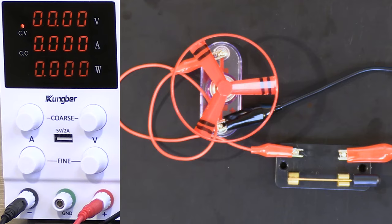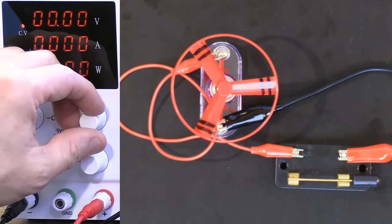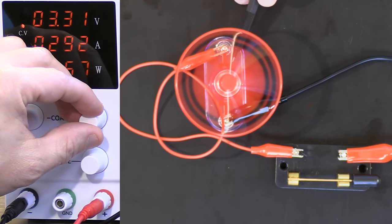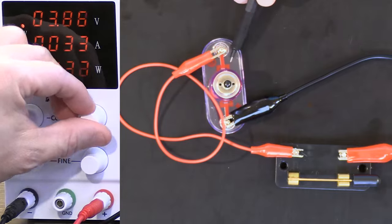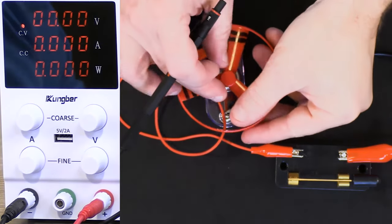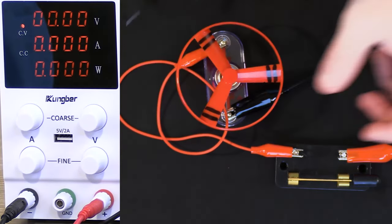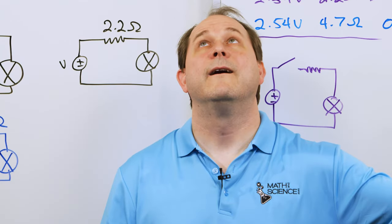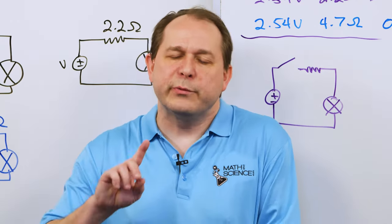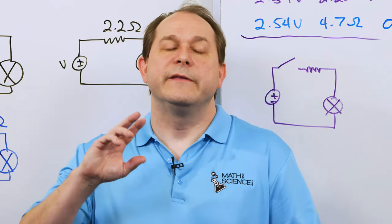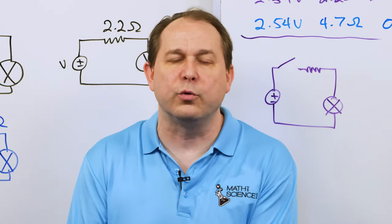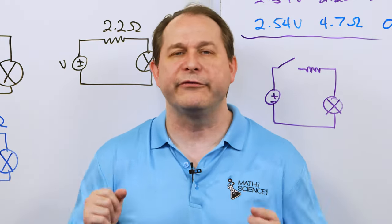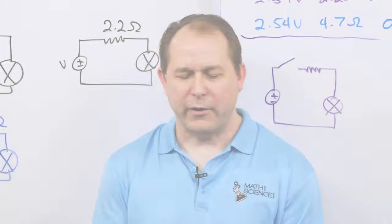Let's do it one more time. As you reverse the direction through a motor, the motor spins the other direction. I just wanted to show you that's a physical way for you to tell that the current flow is backwards or different when we reverse the wires and the connection on the motor.